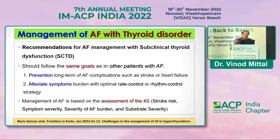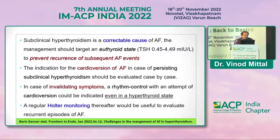Overall AF management is based on the 4S framework: stroke risk, symptom severity, severity of AF burden, and substrate severity. All four must be considered and treatment individualized. Subclinical hyperthyroidism is a correctable cause of AF.